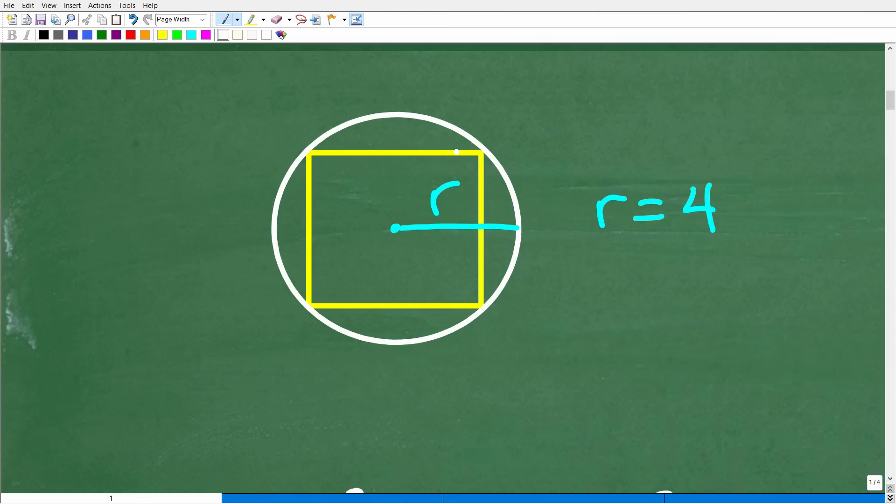So we have this square inscribed inside of this circle. Again, that means that the corners of the square are, in fact, touching the circle. Now what do we know about squares? Well, we know that the sides are equal. By definition, this is a square. So this circle, we do know that the circle's radius is 4. Now what is the radius of a circle? Well, the radius emanates from the center of the circle. So here, if I have a circle from the center out to any point on the circle, that is the radius.